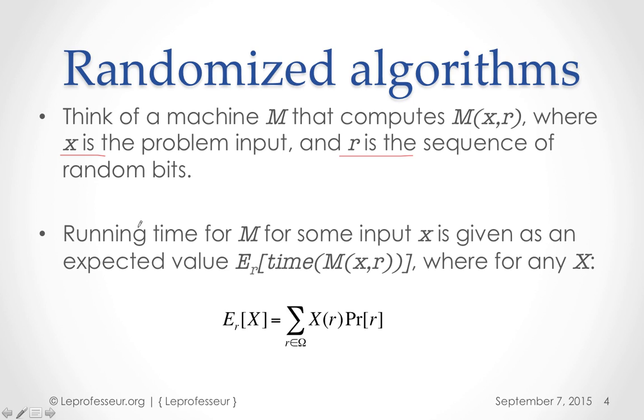Now how do we analyze the runtime of such machine? Runtime of such machine is that you run the machine one time, two time, and get the distribution. Well, essentially it is a random process, and so the time would be the expectation.